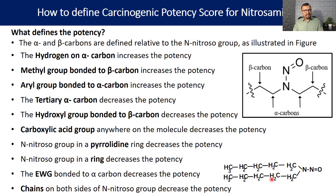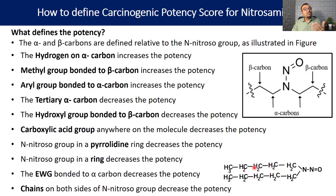Finally, chain length on both sides of the nitrosamine group also helps decrease potency. A chain length greater than or equal to five members — five, six, or seven — will reduce the carcinogenic potency of the nitrosamine compound. This is how these functional groups impact the carcinogenic potency of the compound.